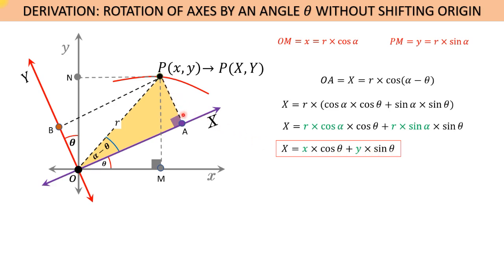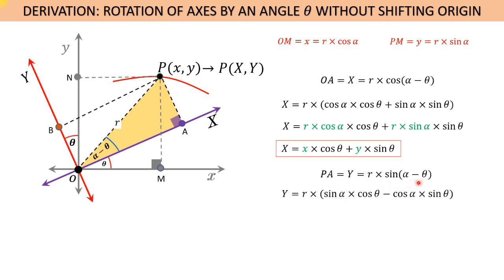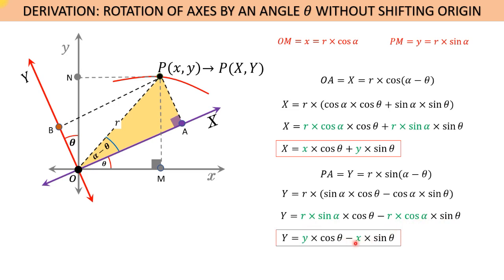Similarly, we can find the length of PA, which is the Y coordinate in the new axis. PA equals capital Y, which equals r·sin(alpha − theta). Using the sine difference formula, this becomes r times (sin(alpha)·cos(theta) minus cos(alpha)·sin(theta)). Substituting r·sin(alpha) by y and r·cos(alpha) by x gives capital Y equals y·cos(theta) minus x·sin(theta).